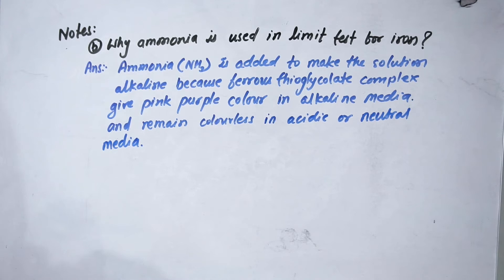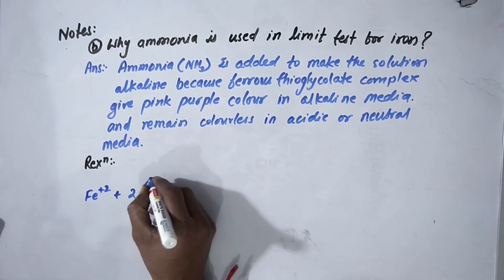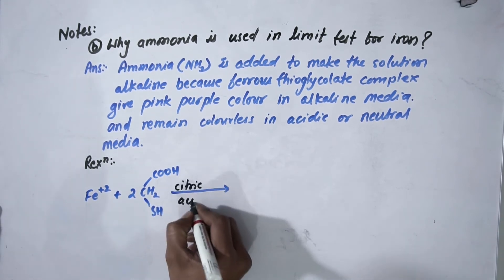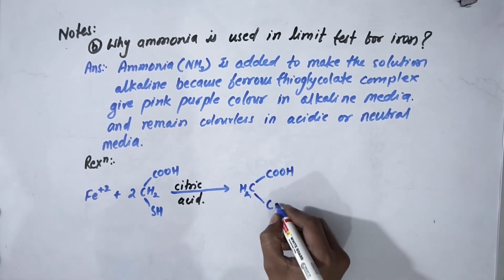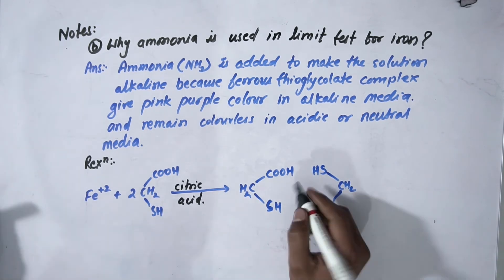alkaline, then you will definitely get pink-purple color. Now let's write the reaction. Here is our ferrous Fe2+ plus 2 molecules of thioglycolic acid with citric acid. What you have to do is write both molecules in opposite direction, like this.